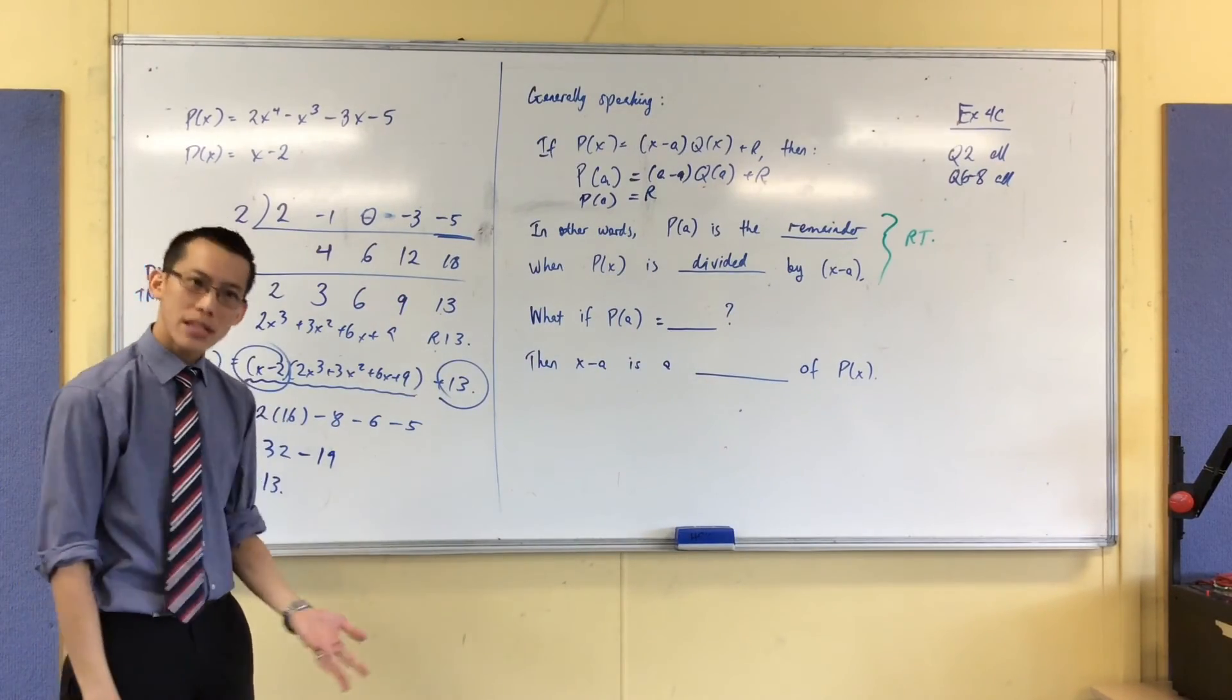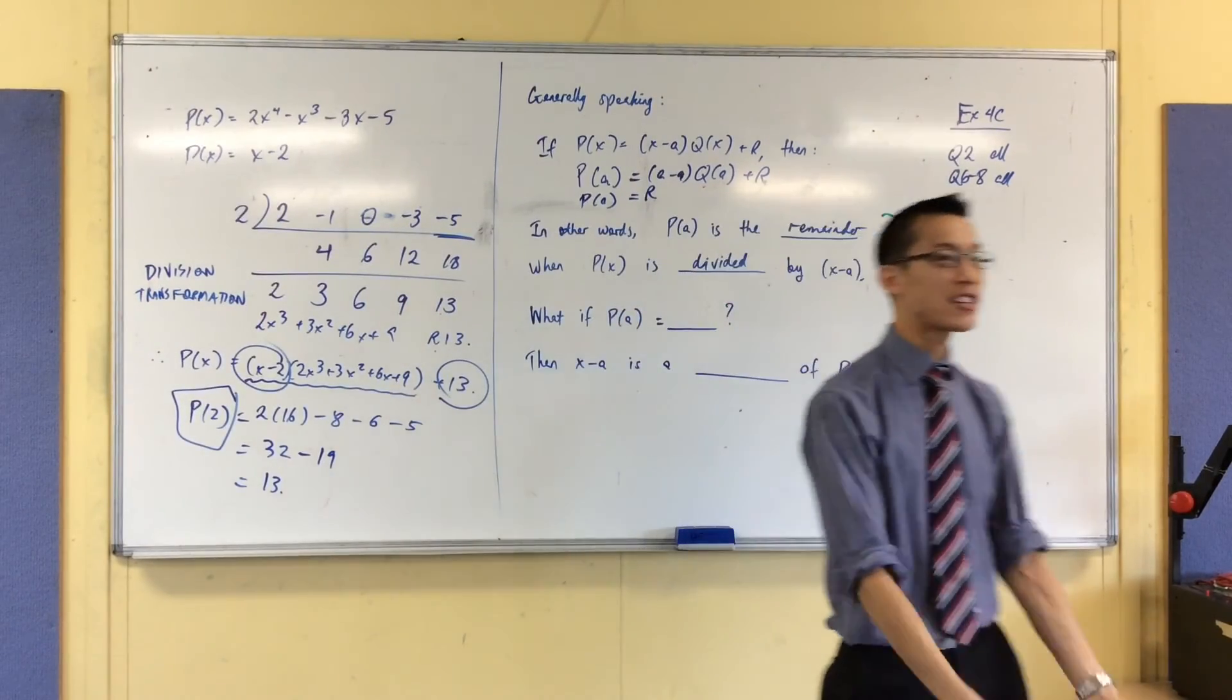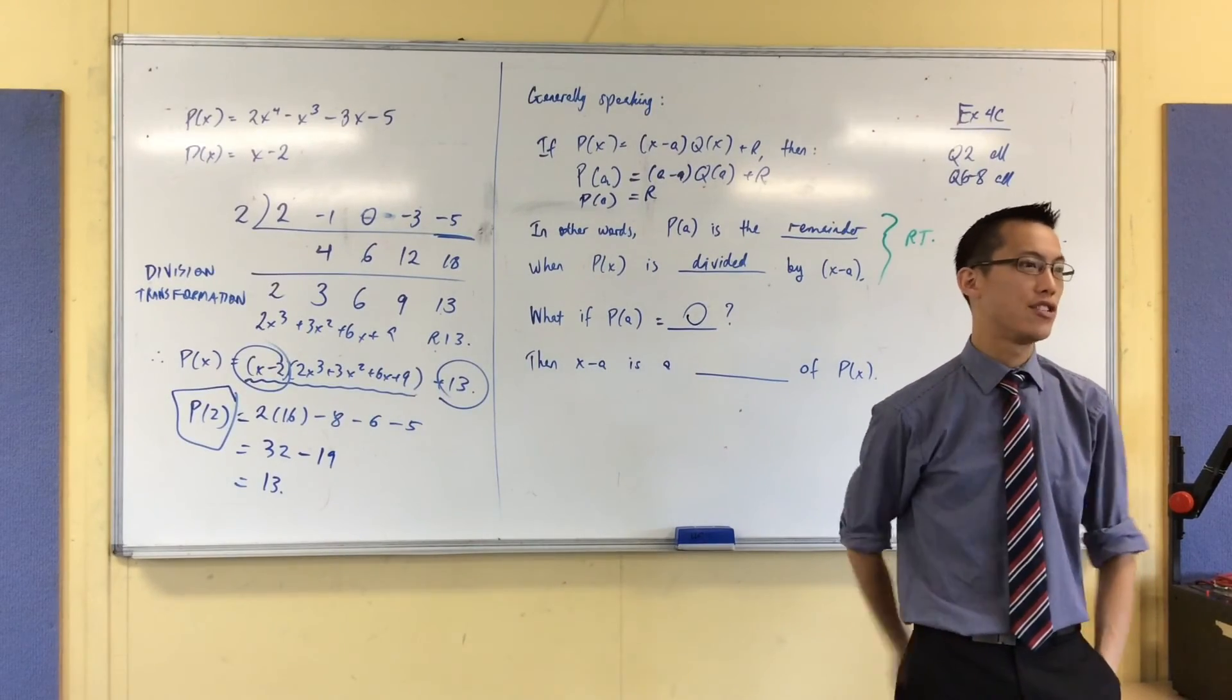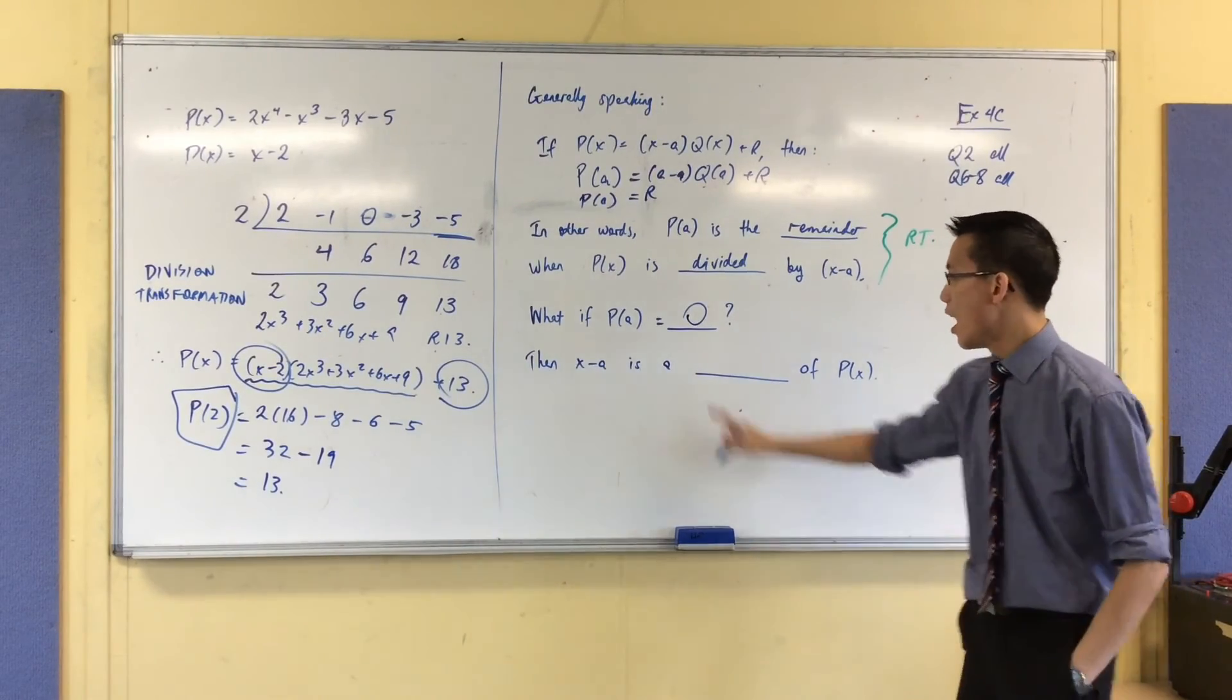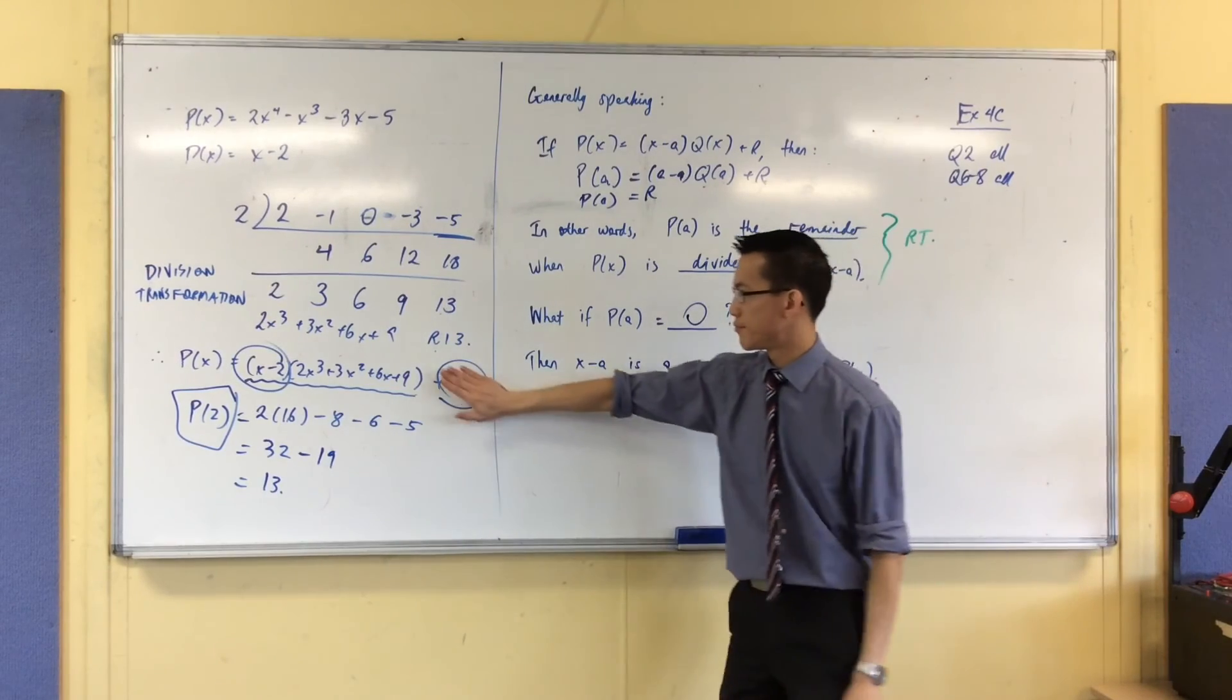But then, what immediately follows after that is, well, the most important remainder I'm after is to actually factorize something when I don't have a remainder, when there is no remainder, or when the remainder is 0. If the remainder is 0, then you've got this scenario, remainder 0.